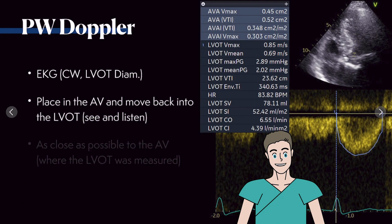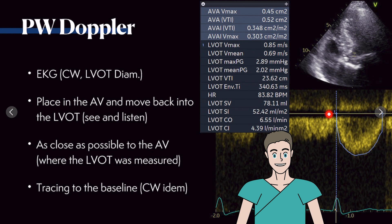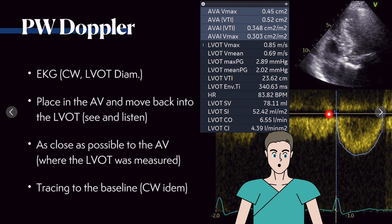Moving on to the pulsed wave Doppler. The pulsed wave Doppler is the second Doppler we need for aortic stenosis. We need it placed directly in the LVOT — optimally where you measured the LVOT diameter, which is very often quite difficult. Keep in mind that there is a certain degree of error in this measurement simply because you are sometimes a little bit off.